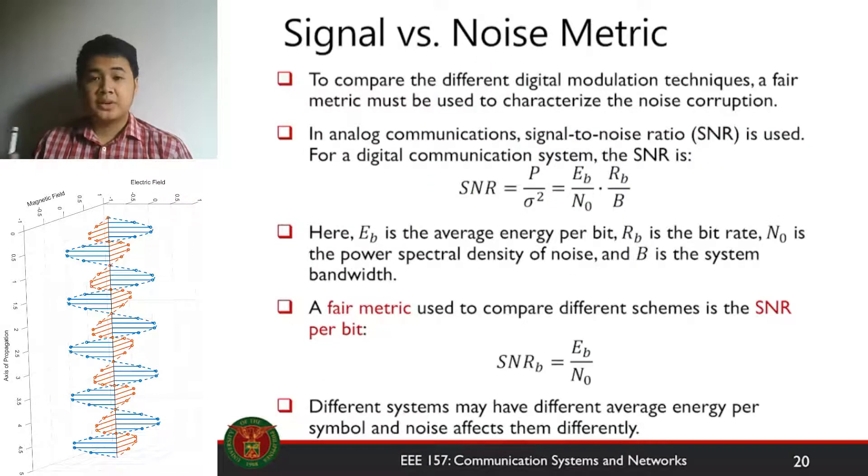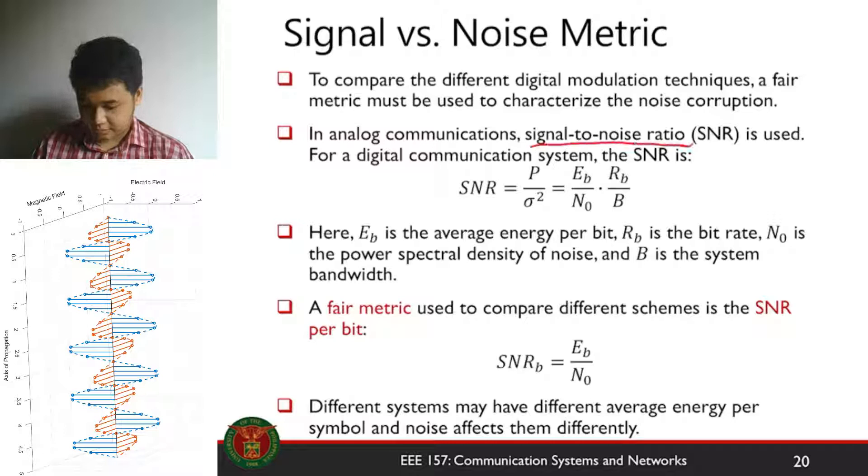So first things first, what metric should we use to characterize the amount of noise corruption in a constellation? For analog communications, we use signal-to-noise ratio. There's a similar term. We can still use that for digital communication. As you recall, the SNR is the power of the transmitted signal divided by the noise power.